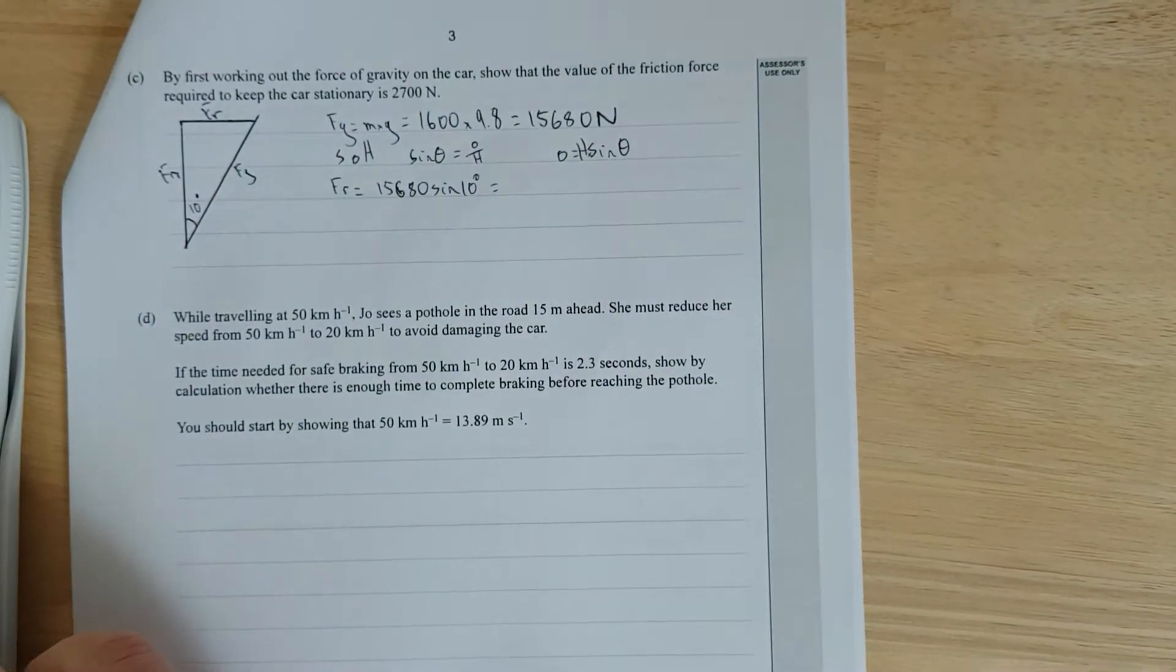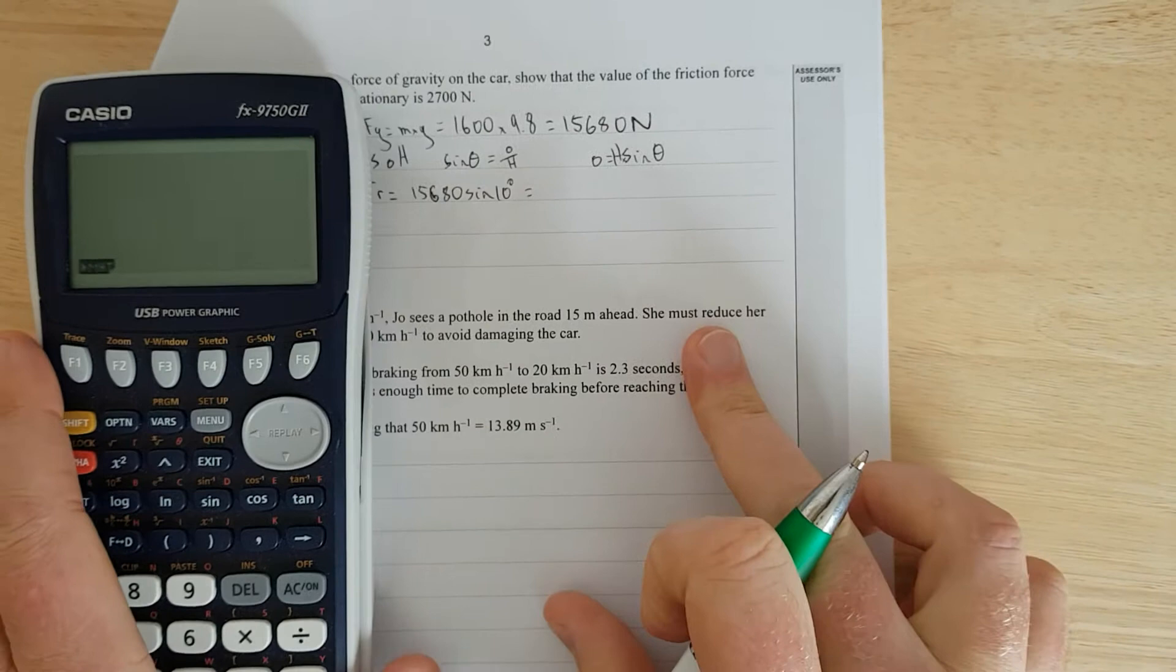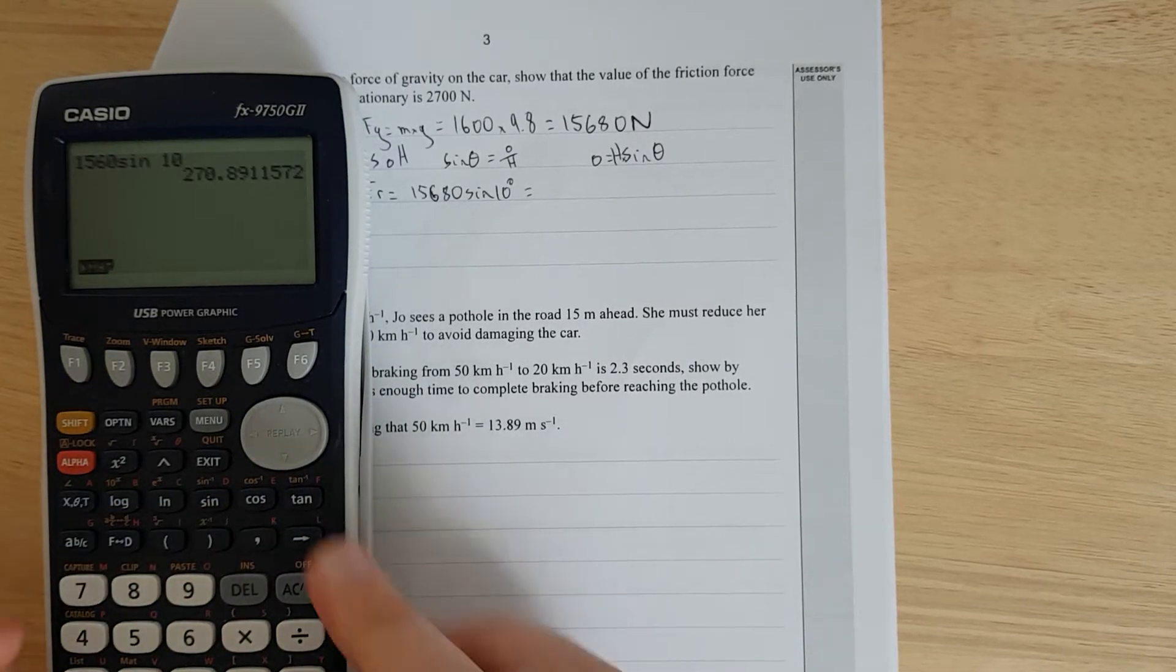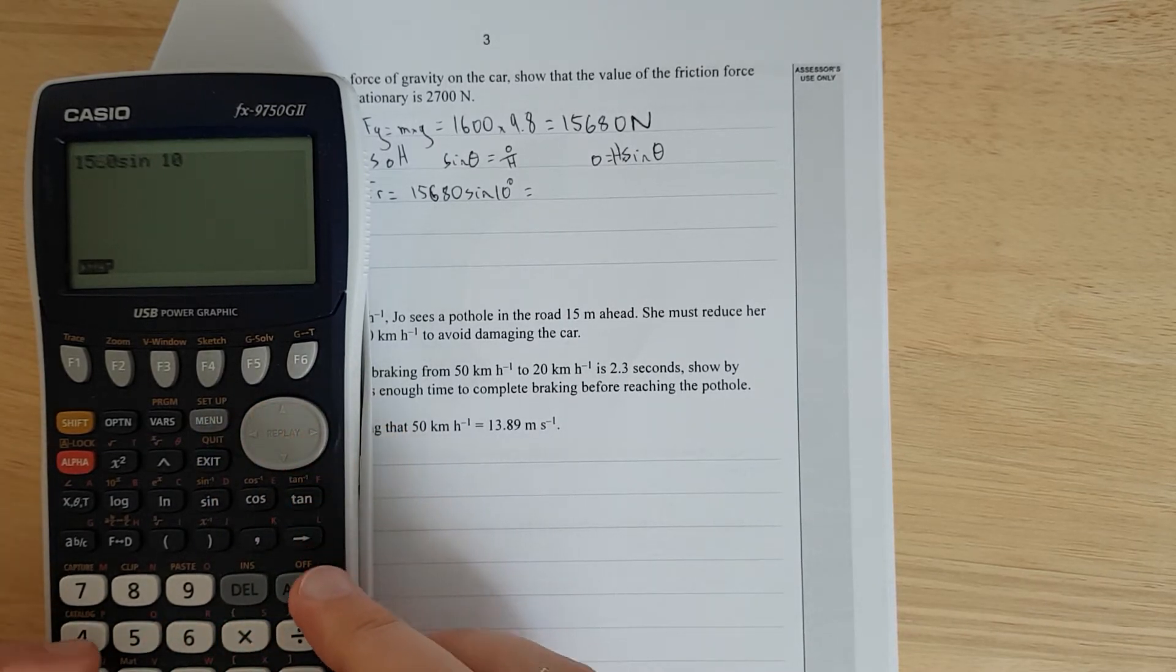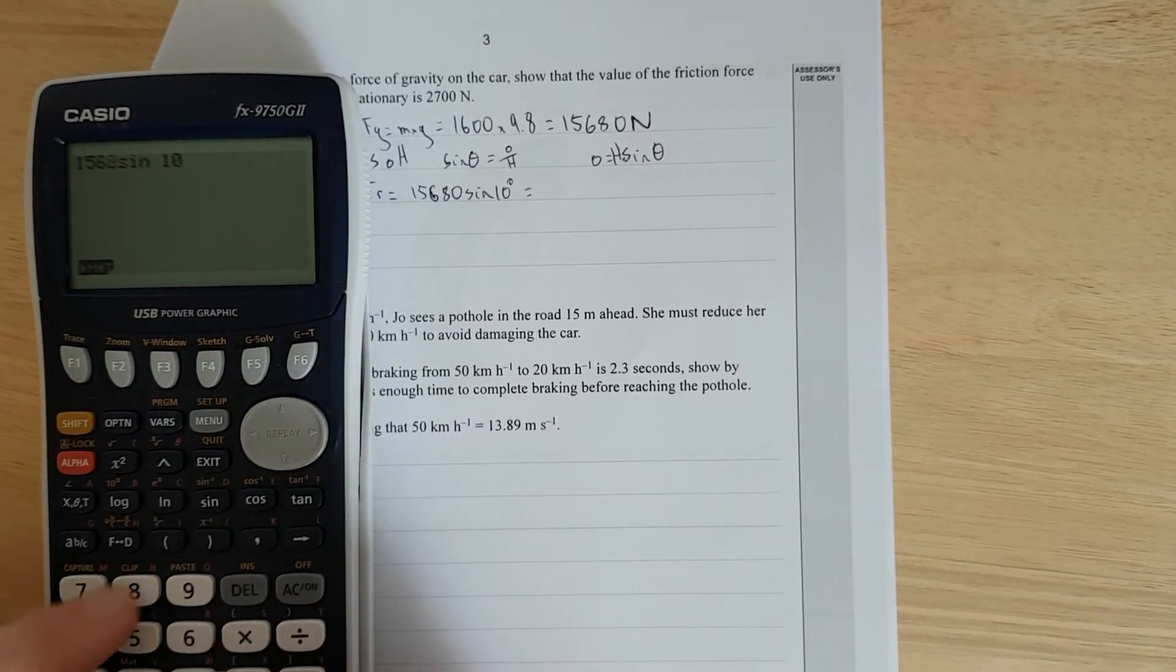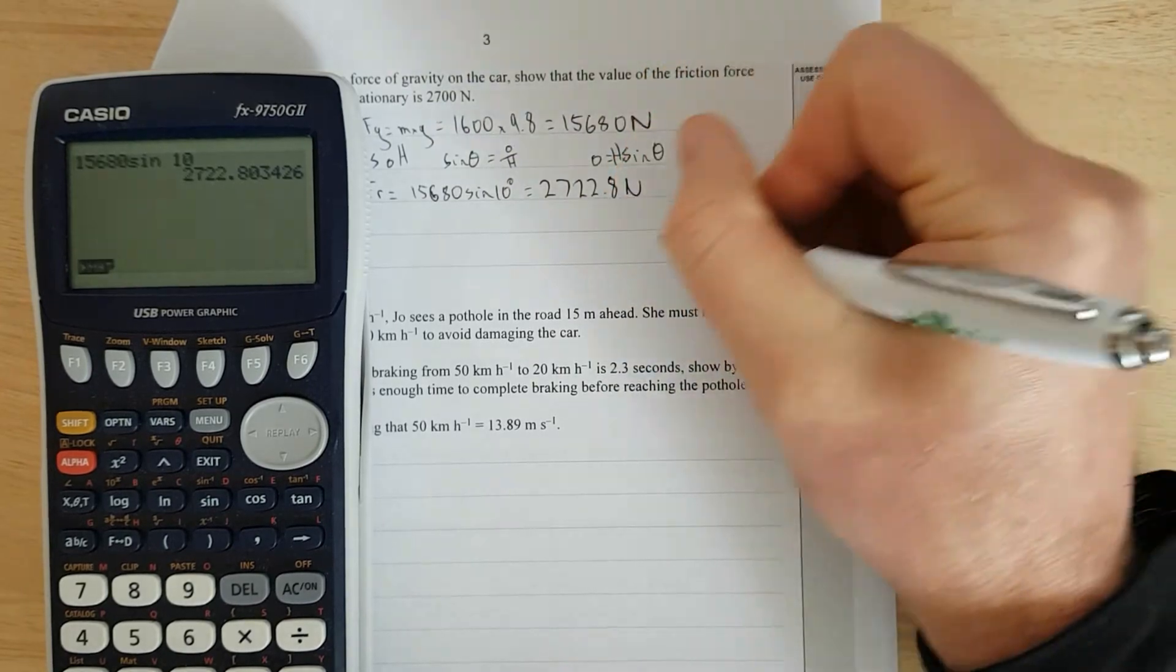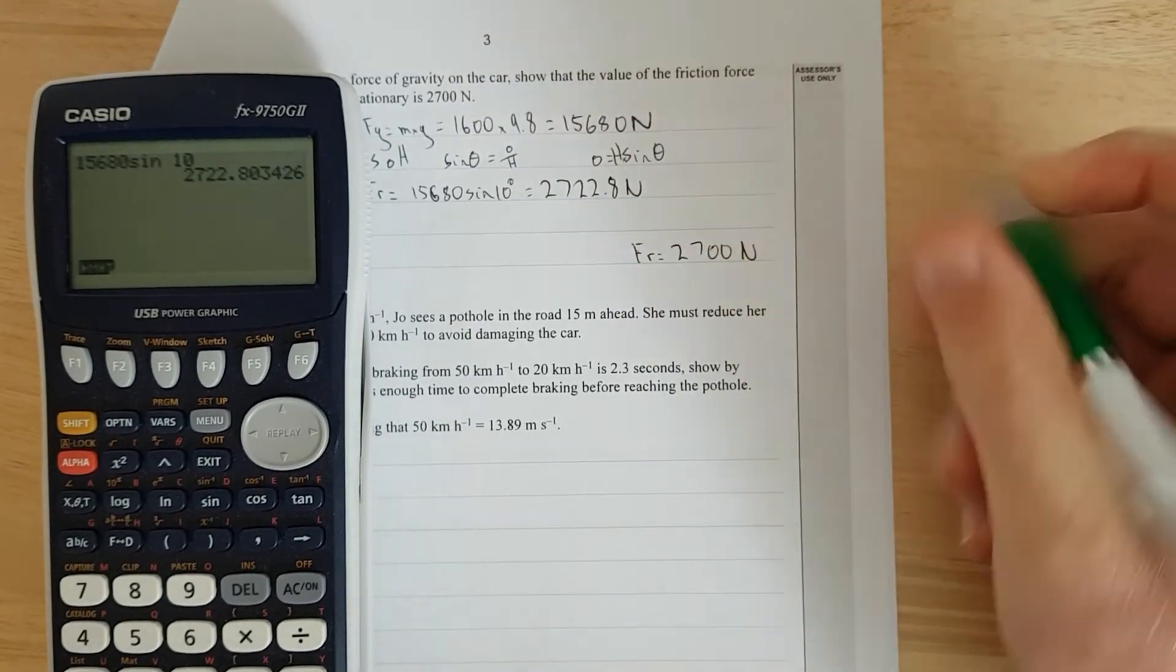We're going to sub in the values. So FR equals 15,680 sine 10 degrees. If we do that in our calculator, 15,680 sine 10 equals 2,722.8 newtons. So then we have FR equals 2,700 newtons. There we go.